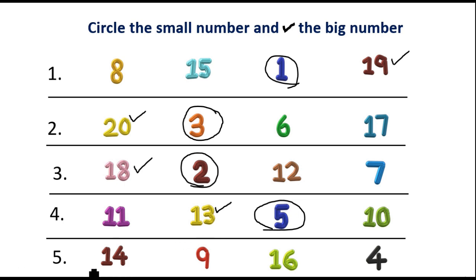Fifth one: 14, 9, 16, 4. Which is small? Yes, 4 is small. So circle 4. Which is big? Yes, 16 is big. So tick 16.